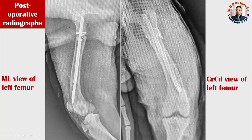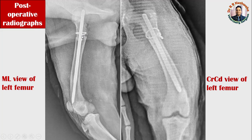One question is why we placed a cerclage wire in the proximal fracture fragment. What happened was while inserting the pin using normograde technique — which I always prefer — when I tried to insert the pin from the trochanteric fossa, because of the fissure in the proximal fracture fragment, that fissure got separated. This is the reason why we placed the cerclage wire. After putting the cerclage wire, we passed the pin, reduced the distal fracture fragment, and then passed the pin through.